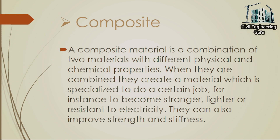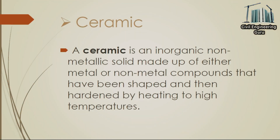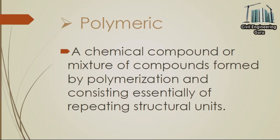A composite material is a combination of two materials with different physical and chemical properties. When combined, they create a material specialized to do a certain job — for instance, to become stronger, lighter, or resistant to electricity — and can also improve strength and stiffness. A ceramic is an inorganic, non-metallic solid made up of either metal or non-metal compounds that have been shaped and then hardened by heating to high temperatures. A polymeric material is a chemical compound or mixture of compounds formed by polymerization, consisting essentially of repeating structural units.